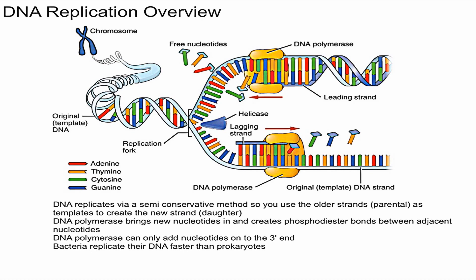It's important to remember that DNA polymerase can only add nucleotides on the three prime end. As a result, you're going to have one side that keeps continuously adding nucleotides, while the other side has to make the strand in segments.